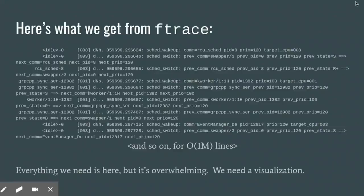Here's a sample of the kind of data we get from ftrace. Each event is on its own line, and it has everything that we need: the cores, the timestamps, what threads were involved, their states, what event it was. A one-second trace on a modern server might produce a couple of millions of lines like this. So we do have the data, but we still need a way to visualize it — and that's what SkedViz is for.